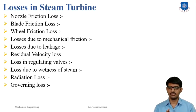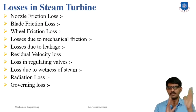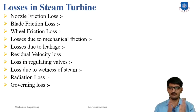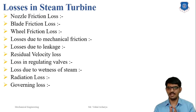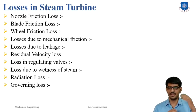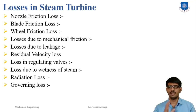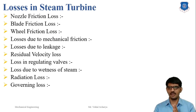Fifth is the leakage loss. Leakage loss differs in impulse and reaction turbines. In the impulse turbine, leakage loss occurs between the shaft bearing, nozzle, and stage diaphragm. For the reaction turbine it may occur at the blade tips. This loss is due to the leakage of steam at each stage of the turbine, and the total leakage loss is one to two percent of the total turbine loss.